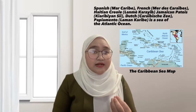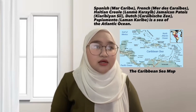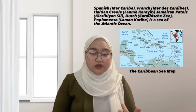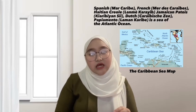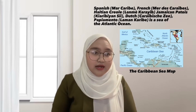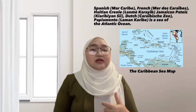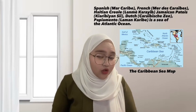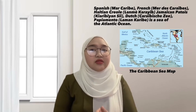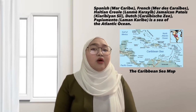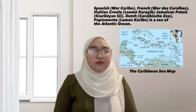Situated largely on the Caribbean plate, the region has more than 700 islands, islets and reefs. Almost all of the Caribbean islands are in the Caribbean Sea with only a few in inland lakes. The largest island is Cuba. Other sizeable islands include Hispaniola, Jamaica, Puerto Rico, North Andros and Trinidad. Some of the small islands are referred to as a rock or reef.